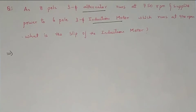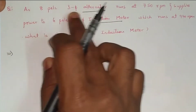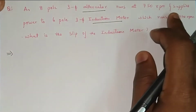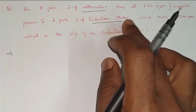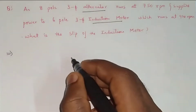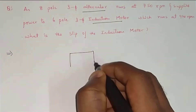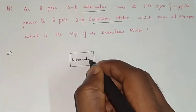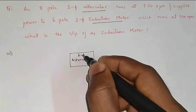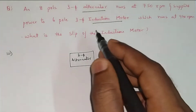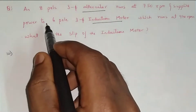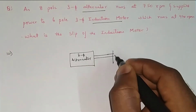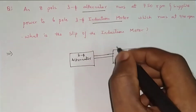Let's read the question: an eight-pole three-phase alternator runs at 750 rpm and supplies power to a six-pole three-phase induction motor. Since two machines are given, I'll draw them first — one is a three-phase alternator, which is nothing but a synchronous generator, connected through shaft to supply power to an induction motor, that is a three-phase induction motor.